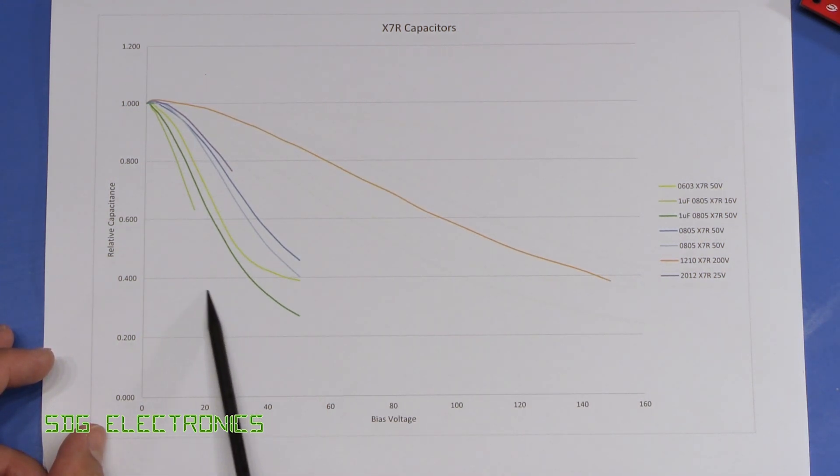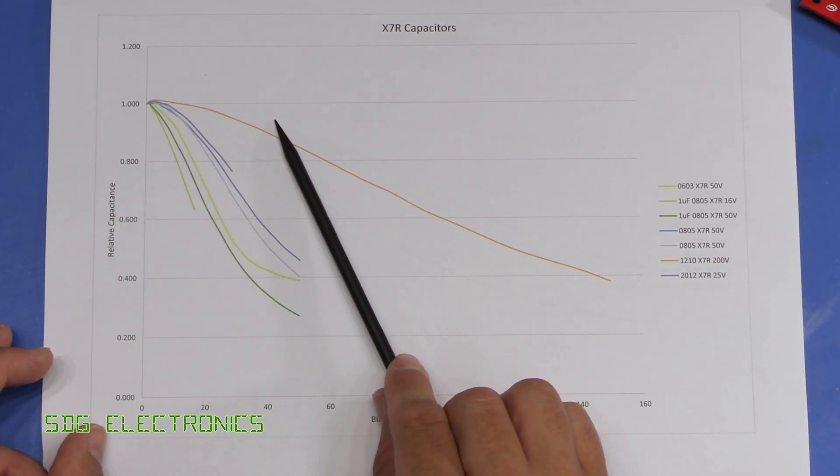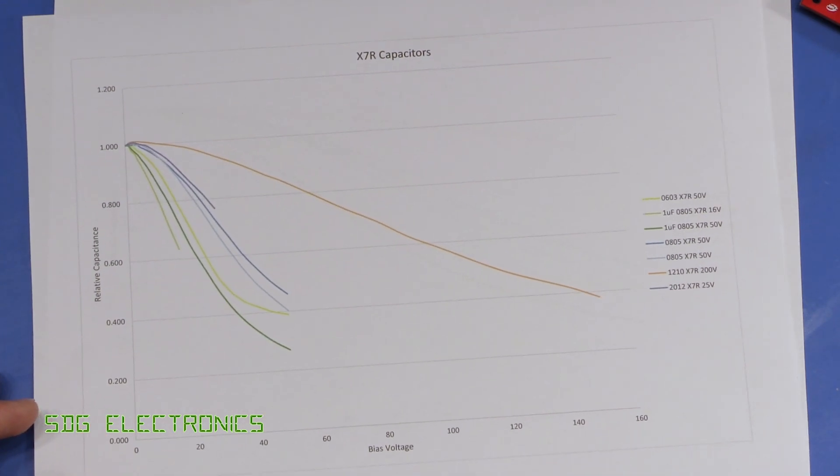And it sort of asymptotes towards the same sort of nominal value at the end of its working voltage. But if you did want to use your capacitor at 50 volts, it might make more sense to use a 200 volt capacitor as opposed to something rated at 50 volts.